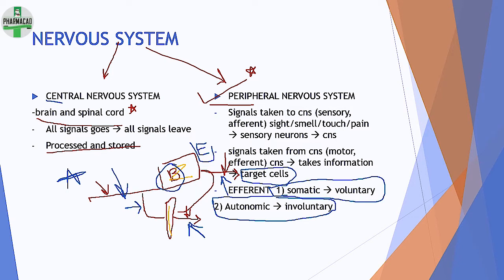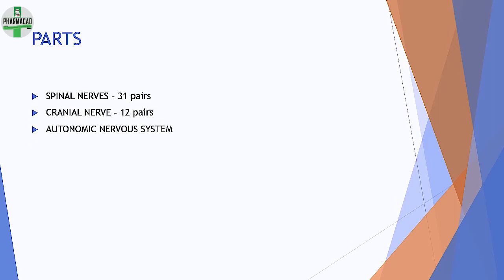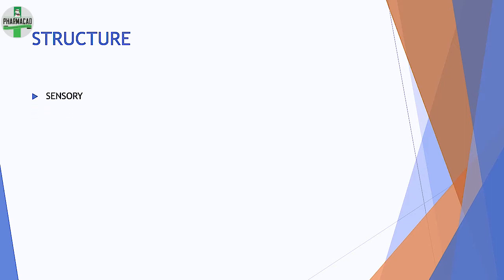The main parts of the peripheral nervous system: spinal nerves — 31 pairs; cranial nerves — 12 pairs; and the autonomic nervous system. We will be doing each one separately in detail. The basic structure has one sensory component (afferent) and one motor component (efferent).